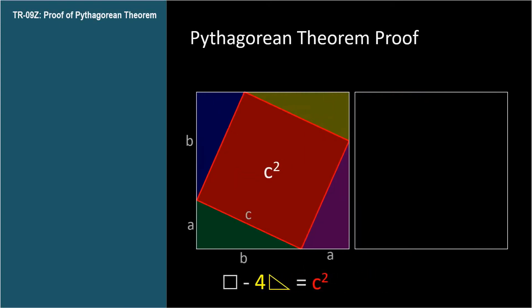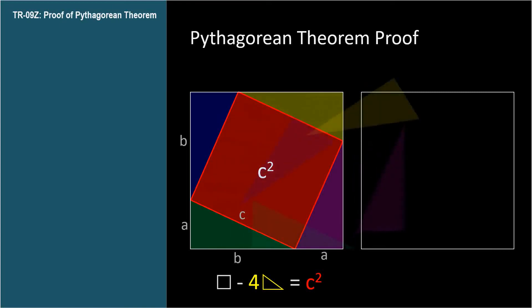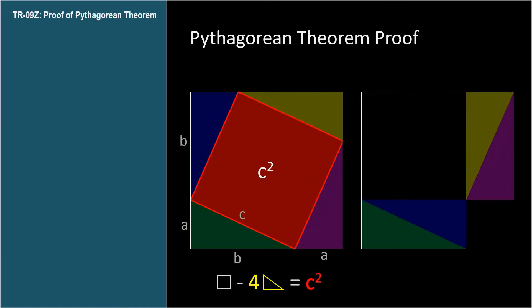Let's make a copy of this big square and rearrange the triangles inside. The big squares are the same size because their sides both have length A plus B. The triangles haven't changed size either, so we've just rearranged them.